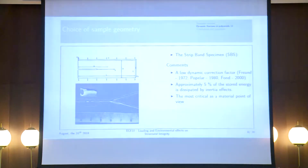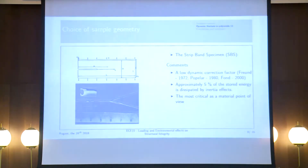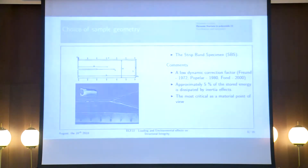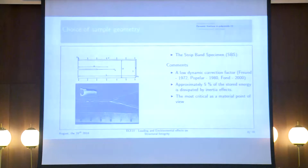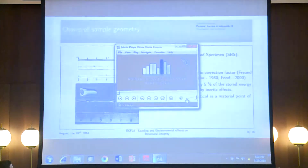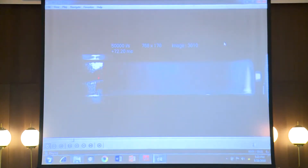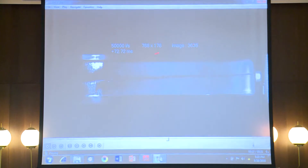When working on dynamic fracture, you have to make experiments and choose a sample geometry. The strip bond specimen is good for that, because it is known to generate a low dynamic correction factor, with approximately 5% of the stored energy dissipated by inertia effects. That is why this geometry is the most representative from a material point of view. Here is a high-speed camera movie: the plate is first pre-stressed, then the crack is initiated with an impact on a razor blade, and the crack propagates dynamically at approximately 400 meters per second in the polyamide 11, releasing the elastic energy stored in the structure.